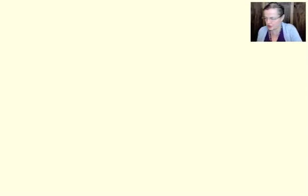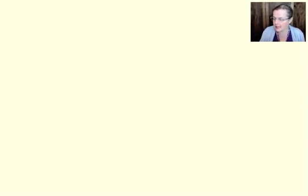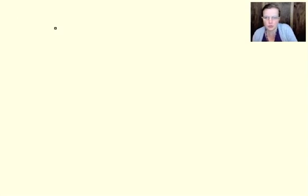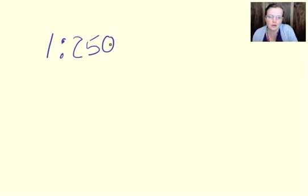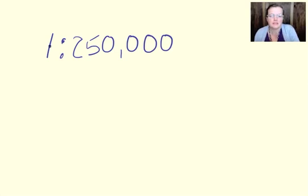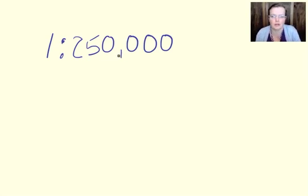We've got Joshua's tricky questions here. So the first question is: how many kilometres is two centimetres on a one to two hundred and fifty thousand scale? So it's one to two hundred and fifty thousand. Now treat yourself, use your written workings. That means one unit on the map equals two hundred and fifty thousand units in real life — one inch on the map is two hundred and fifty thousand inches.